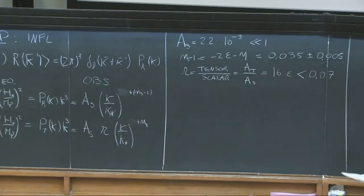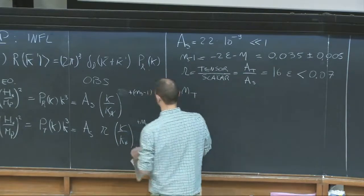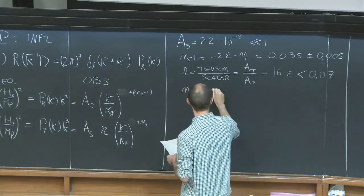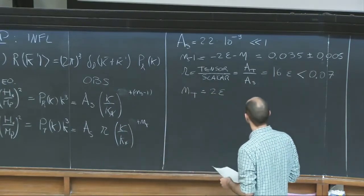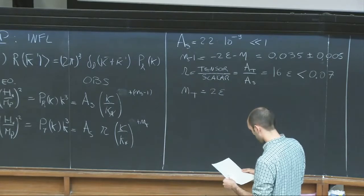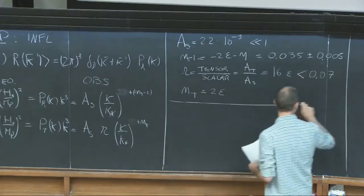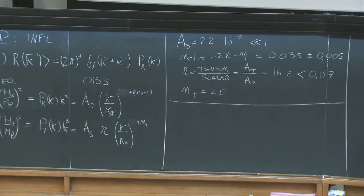The upper bound of 0.07 is easy to remember — the James Bond number. Since we haven't seen tensors, we also haven't seen their tilt, which would be approximately 2 epsilon. There are a couple of interesting comments to make about this basic phenomenology of inflation meeting experiments.